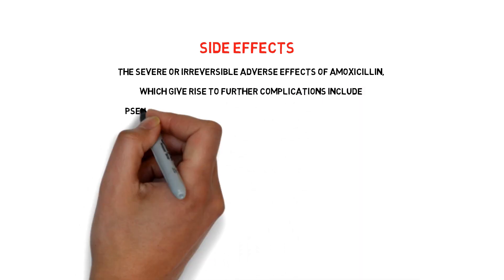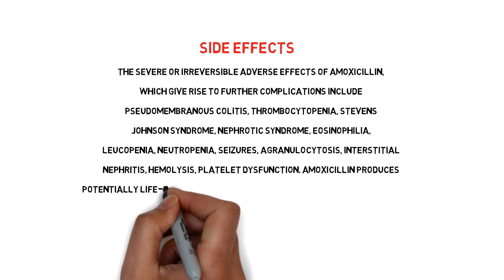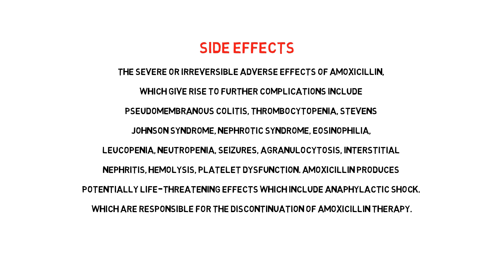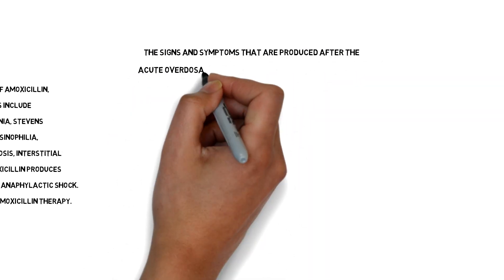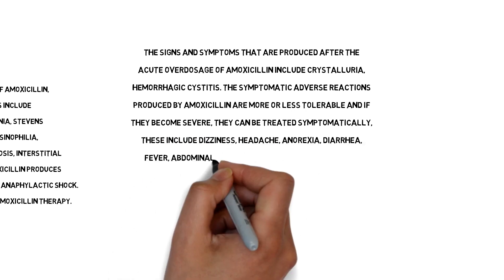The severe or irreversible adverse effects of amoxicillin, which give rise to further complications, include pseudomembranous colitis, thrombocytopenia, Stevens-Johnson syndrome, nephrotic syndrome, eosinophilia, leukopenia, neutropenia, seizures, agranulocytosis, interstitial nephritis, hemolysis, and platelet dysfunction. Amoxicillin produces potentially life-threatening effects including anaphylactic shock, which are responsible for the discontinuation of amoxicillin therapy. Signs and symptoms after acute overdosage include crystalluria and hemorrhagic cystitis.